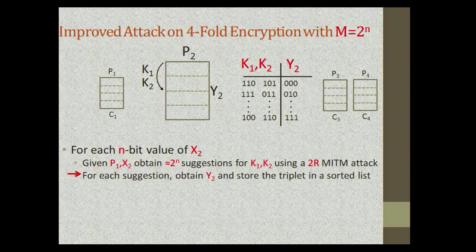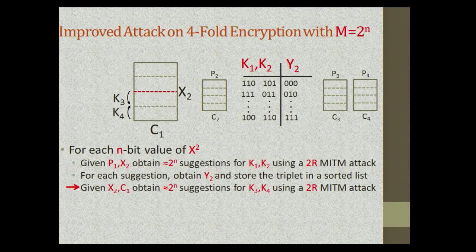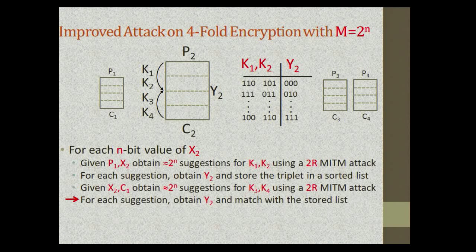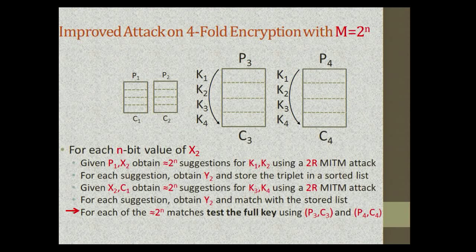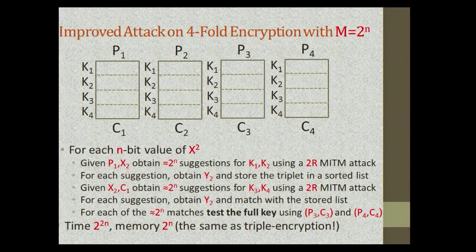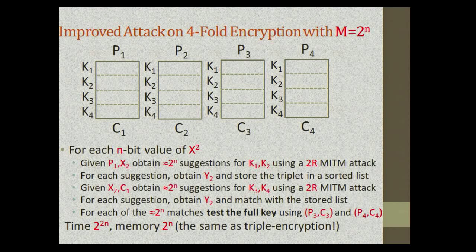For the bottom part of the cipher, given x2 and c1, we obtain 2^n suggestions for k3 and k4 using our two-round meet-in-the-middle attack. We then obtain a suggestion for y2 by partially decrypting c2 and matching with the list, obtain a suggestion for the full key, and test it using the remaining plaintext-ciphertext pairs. This requires time 2^(2n). Each step requires 2^n time and is repeated 2^n times, so the total time is roughly 2^(2n) and memory is 2^n. We obtain the same parameters as for triple encryption, which is surprising — we added another round key but did not increase security.